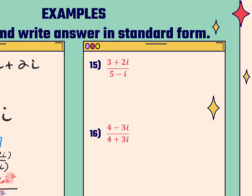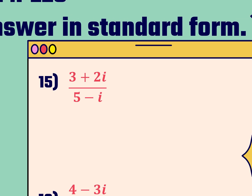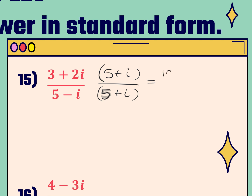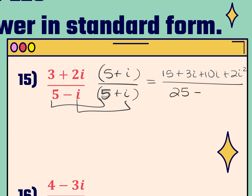For number 15, we're going to do exactly the same thing. We can't leave this i in the denominator, so we need to multiply by the complex conjugate. The complex conjugate is going to be 5 plus i. You multiply that to both the numerator and the denominator — essentially we're multiplying the fraction by 1, since anything divided by itself is 1, but it gets rid of that i in the denominator. FOILing the numerator gives 15 plus 3i plus 10i plus 2i squared. For the denominator, using first and last: 25 minus i squared.